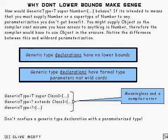So why don't lower bounds make any sense? Well, take a look at this. Suppose we've written a generic type of T super number. What would you expect that to do?